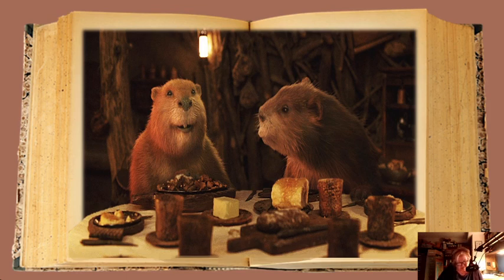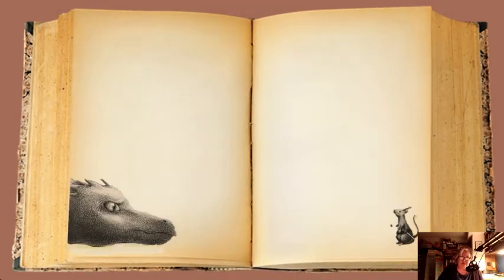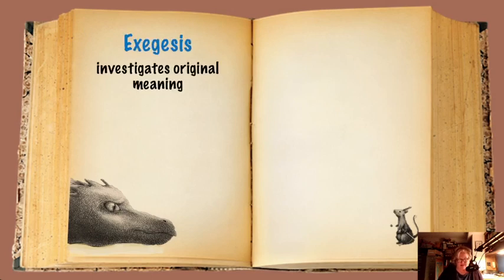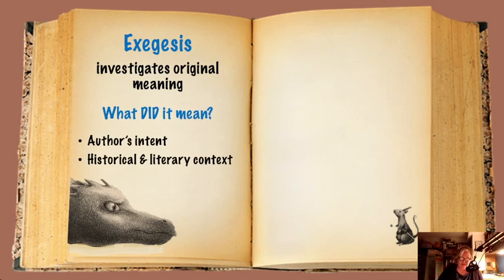So what are we going to do here with the paper? Researching requires — here's a theological term — exegesis. Exegesis simply is an investigation into the original meaning of the author. 'Ex' means 'out from,' referring to deriving something out from the text. So we're simply looking for: what did it mean? What was the author's intent? What did he intend to convey to his original audience?